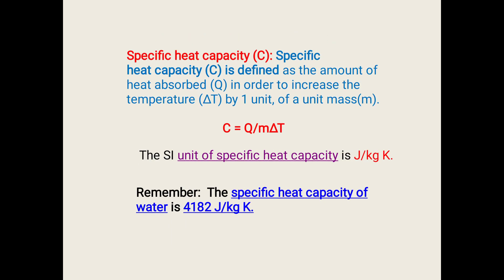We can define the specific heat capacity as the amount of heat absorbed in order to increase the temperature by 1 unit of a unit mass. It is given by C = Q/mΔT. Q is the heat supplied to the body, m is the mass, ΔT is the change in temperature. The SI unit of specific heat capacity is J/kg·K. Remember, the specific heat capacity of water is 4182 J/kg·K.